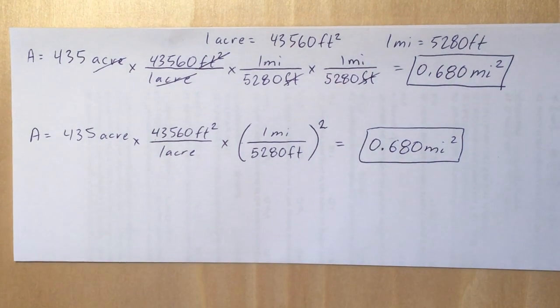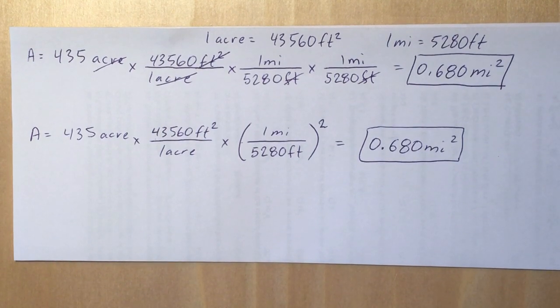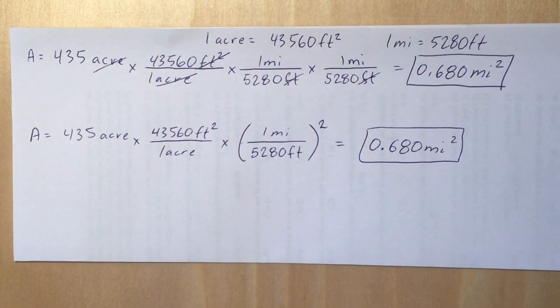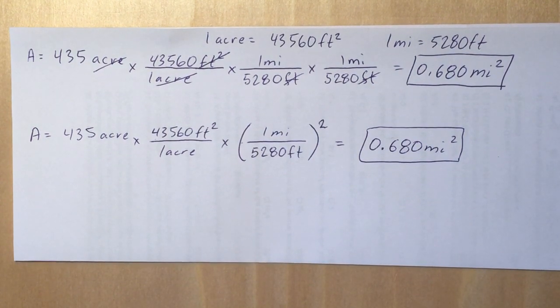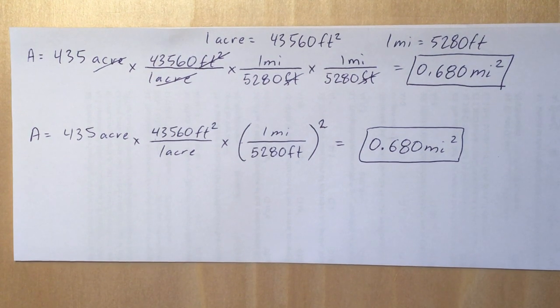Okay, so this problem on the surface seems pretty straightforward, but it's easy to get these types of problems incorrect because we oftentimes forget to cancel out the appropriate number of units the appropriate number of times, or we forget to multiply the numbers within the conversion factors by themselves when we have these squares.